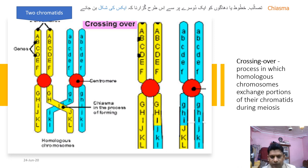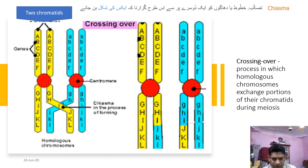Another very important term to discuss is crossing over and chiasma or chiasmata. Crossing over is the process in which homologous chromosomes exchange portions of their chromatids, so that genes of one chromosome are transferred to other chromatids and vice versa.